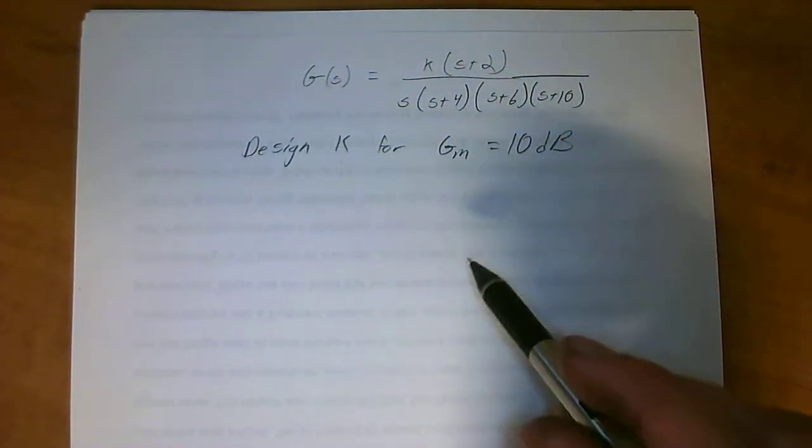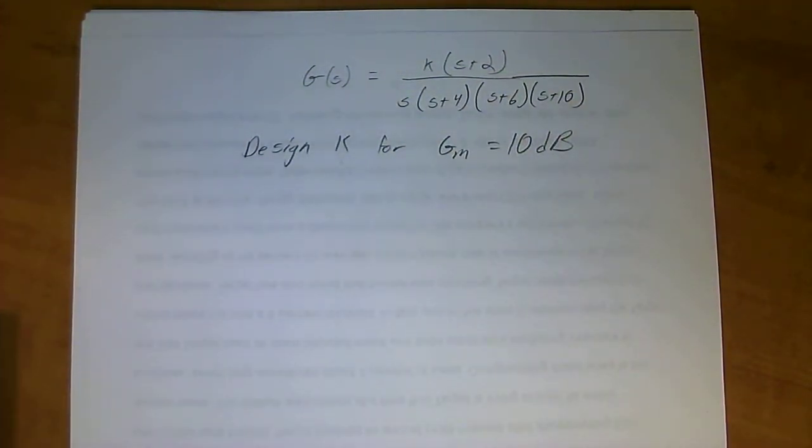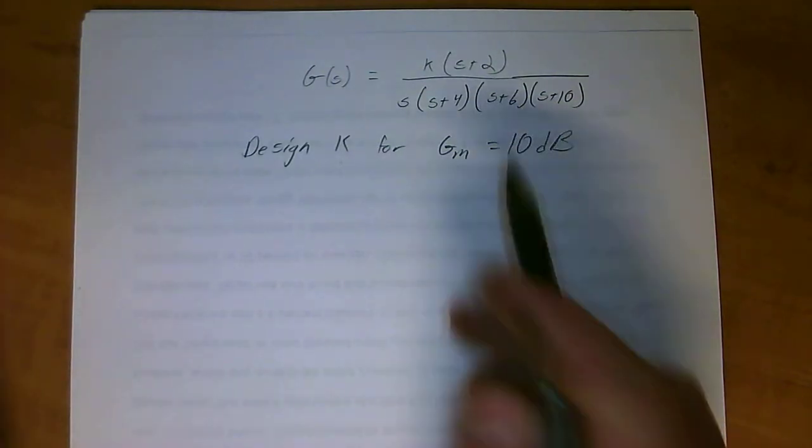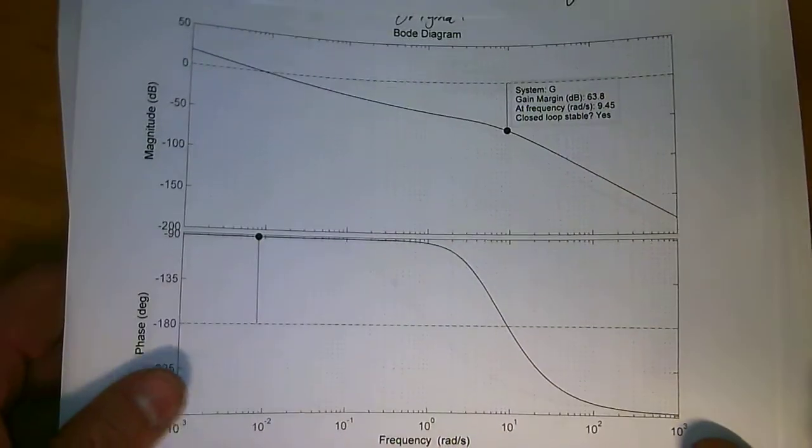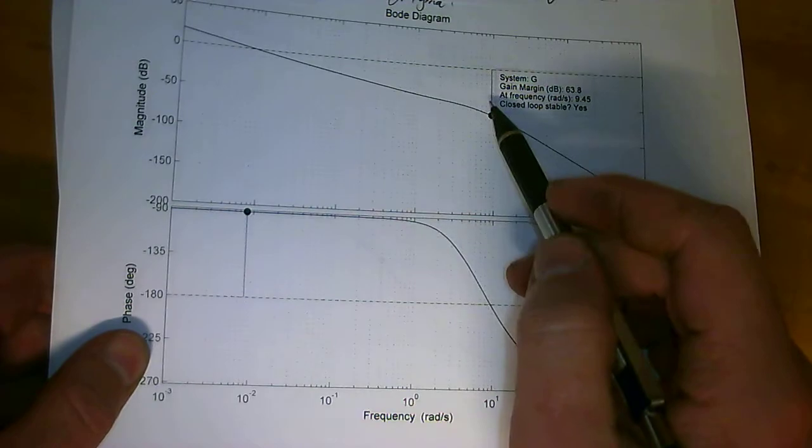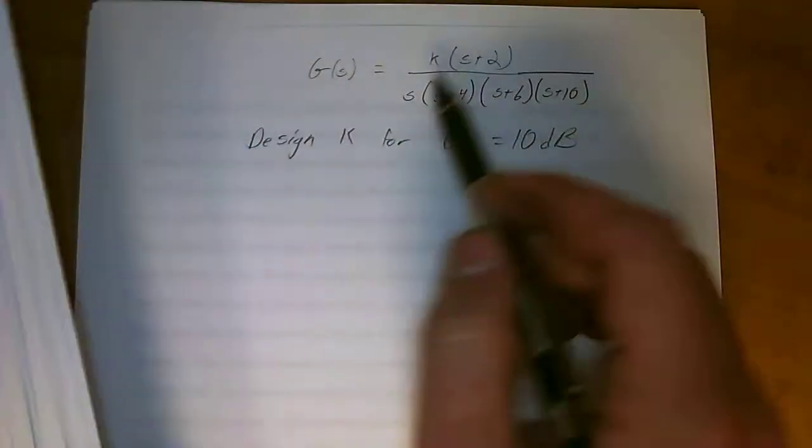So this is our transfer function. Normally in a problem, if you had a test or something, you wouldn't be given the Bode plot. But in this problem, I actually have a graph in Matlab. With graphing the original transfer function, we'll start right here.